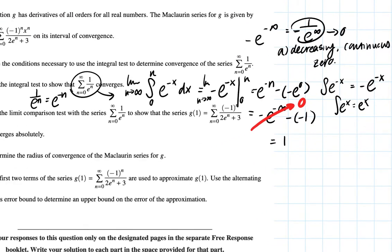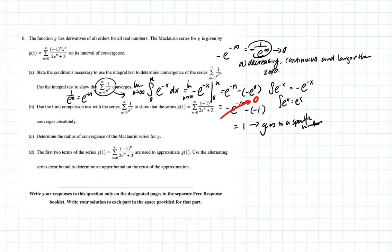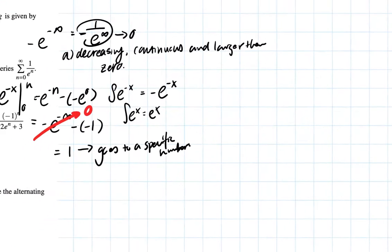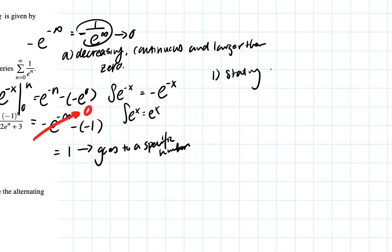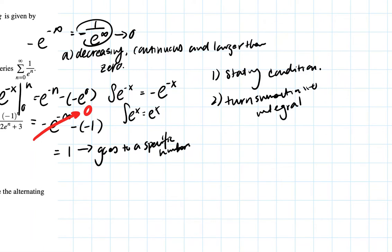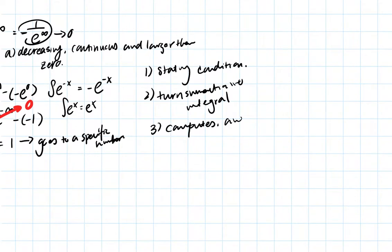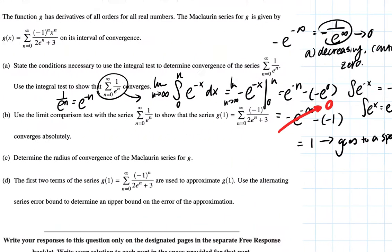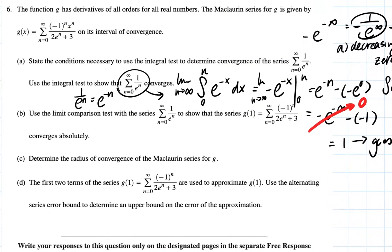The integral test shows that the series converges because the integral goes to a specific finite number. My guess for College Board scoring: one point for stating the necessary conditions for the integral test, one point for turning the summation into an integral, one point for computing the integral, and one point for stating that since it converges to a finite number, the series is convergent.